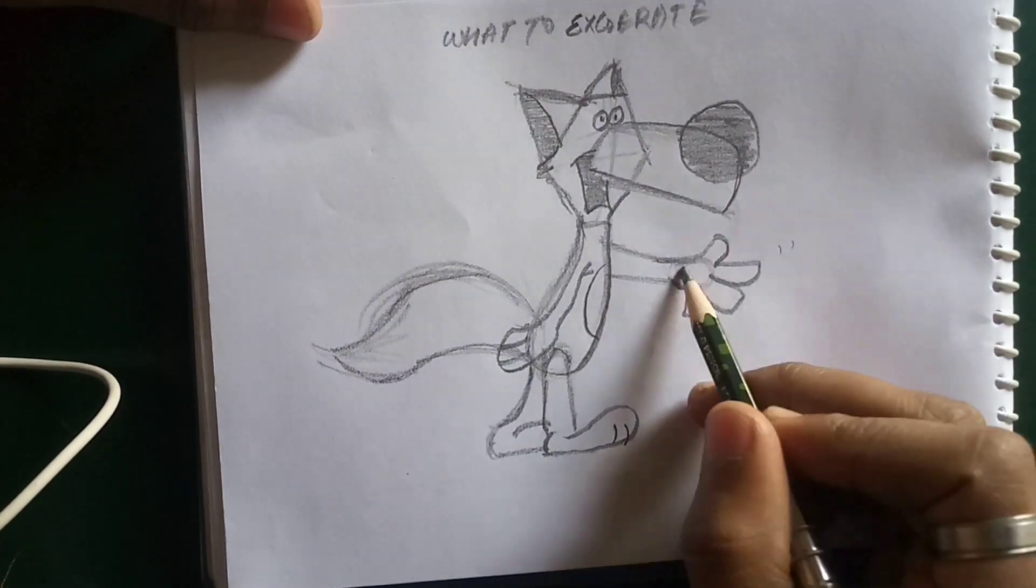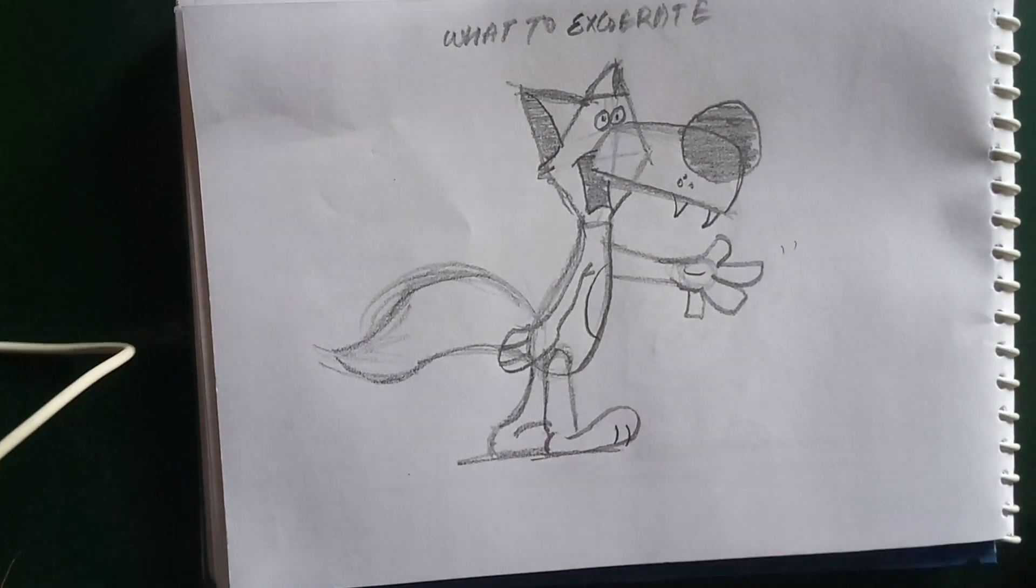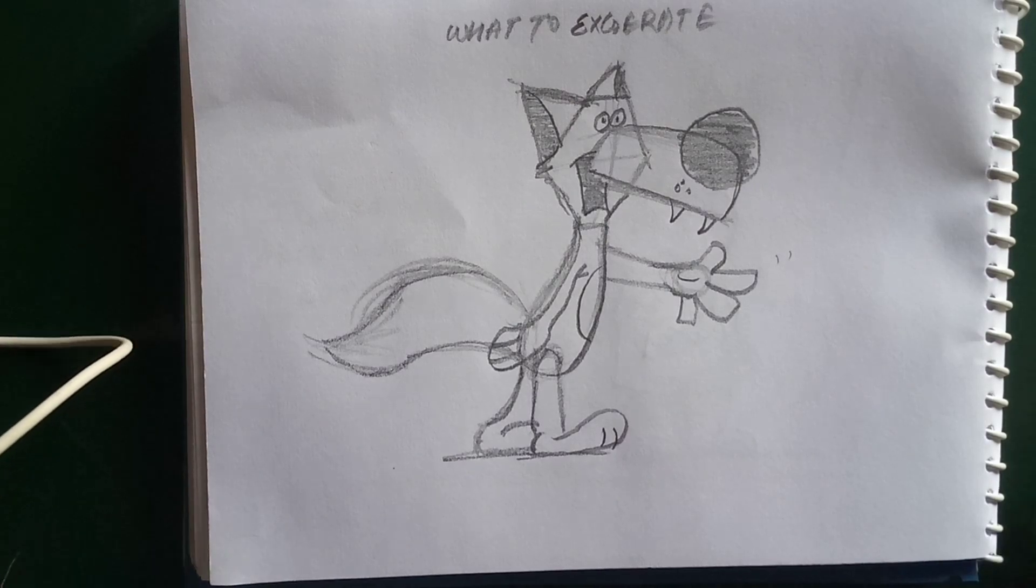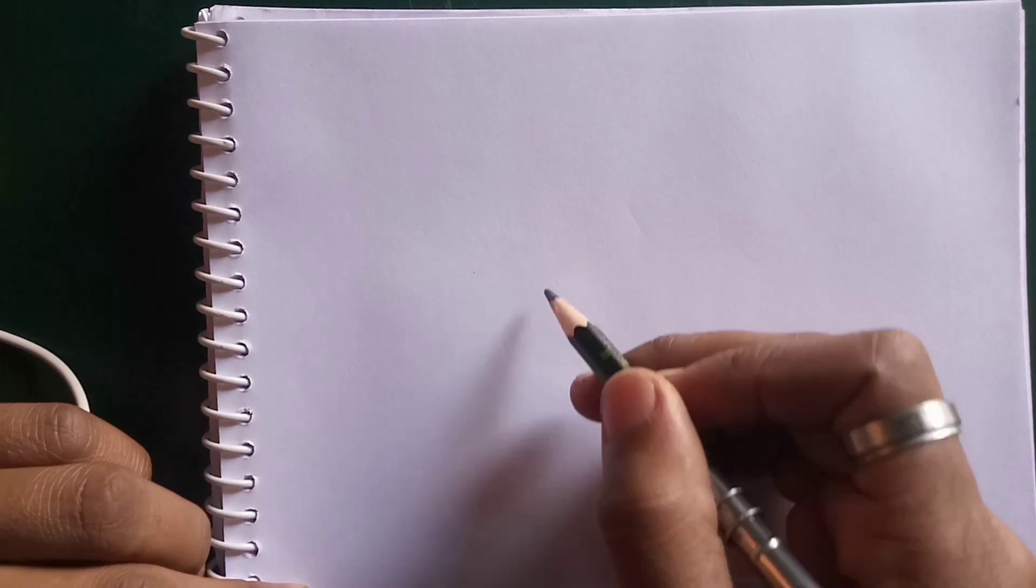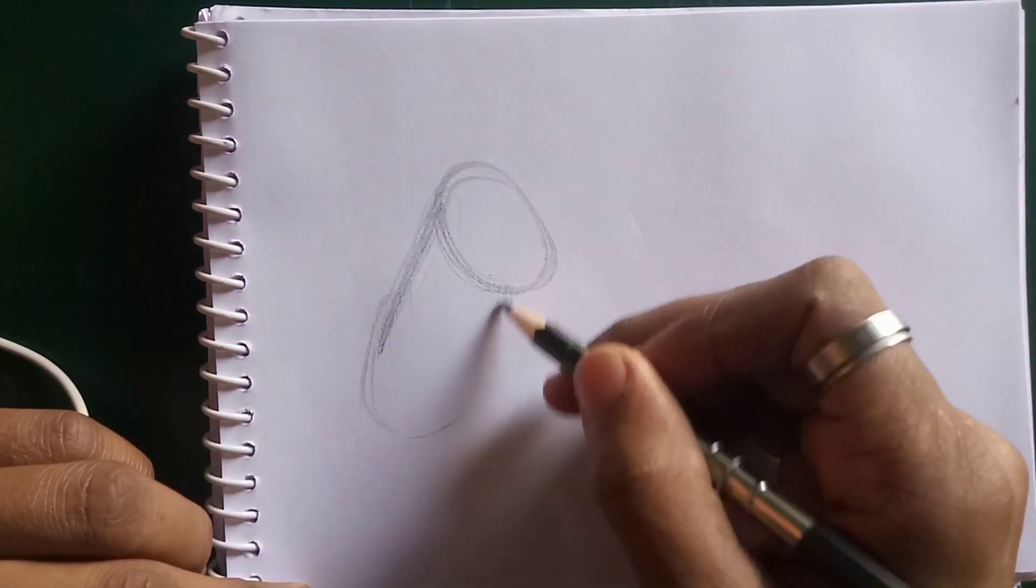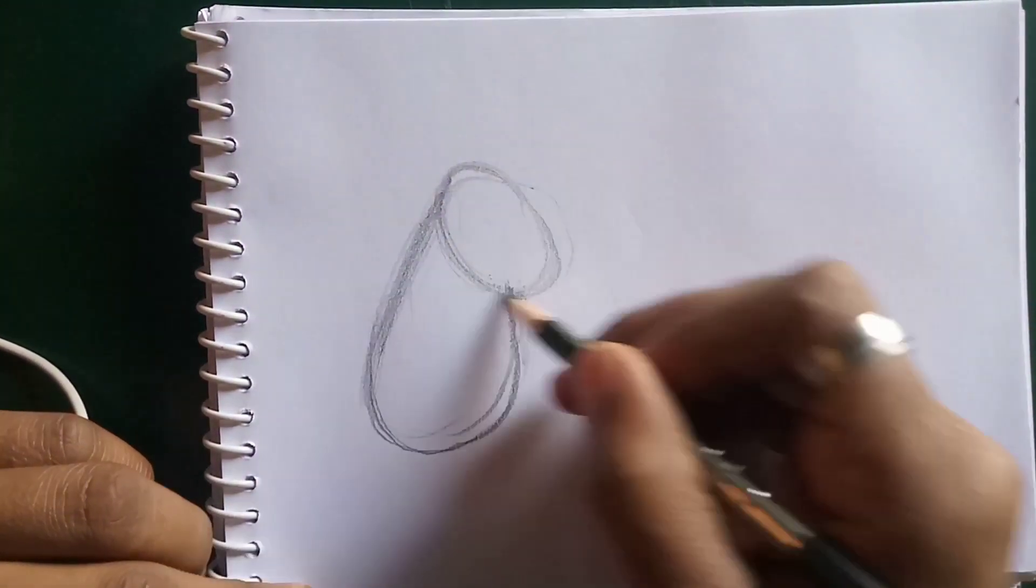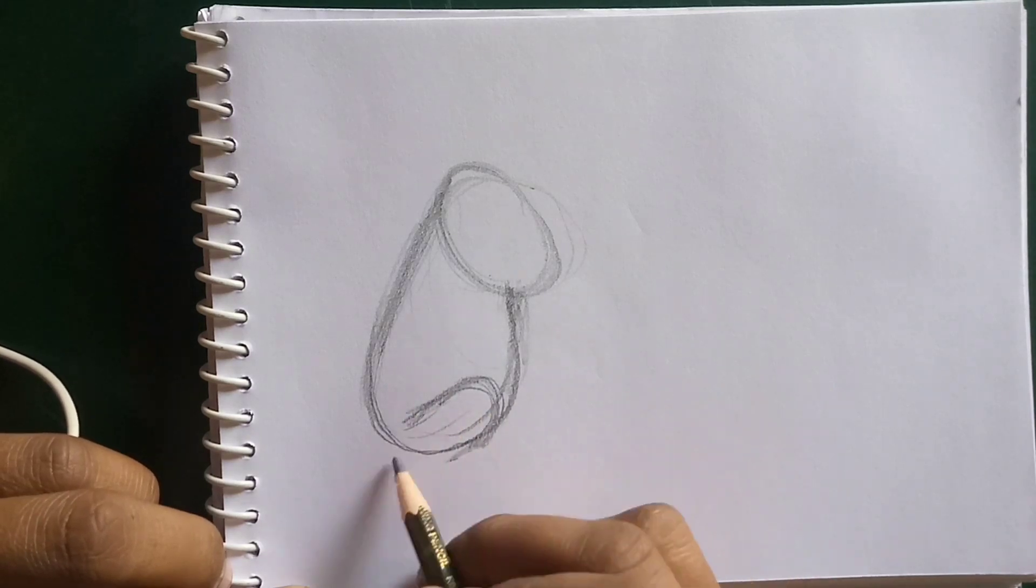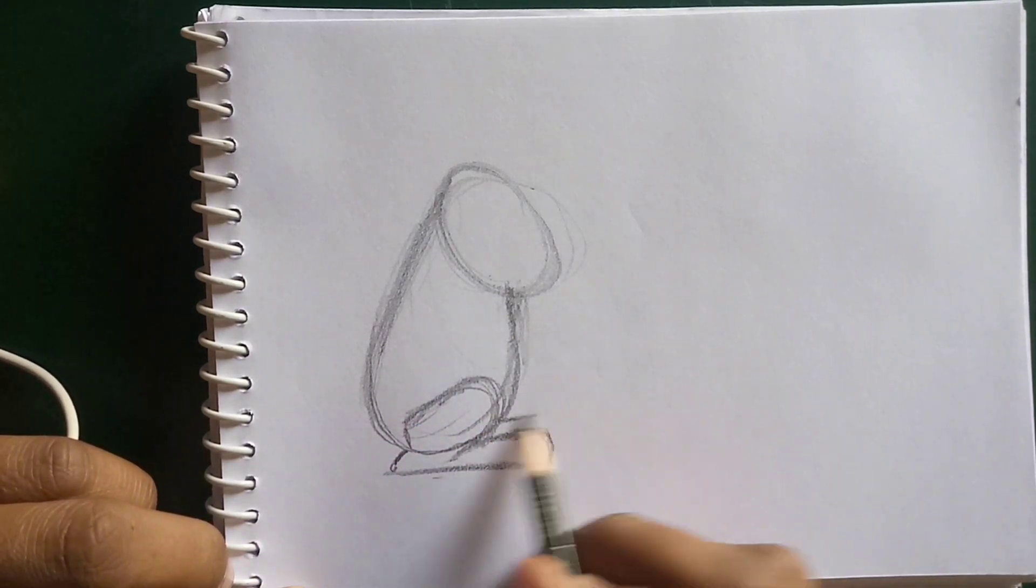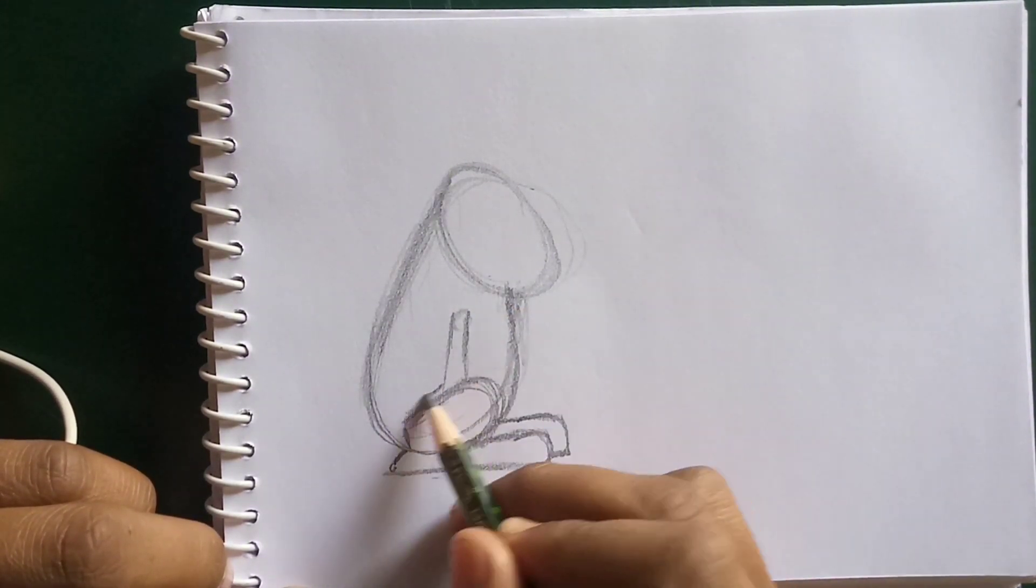The cartoon wolf: the anatomy on this wolf is all wrong, but so what? The distinguished features that we recognize as being wolf-like are all there - muzzle, sharp teeth, pointy ears, and bushy tail.